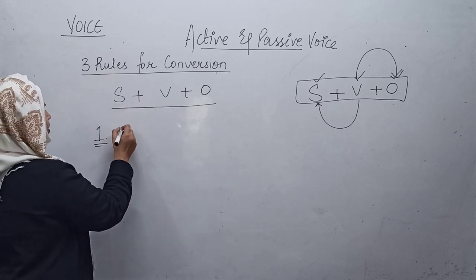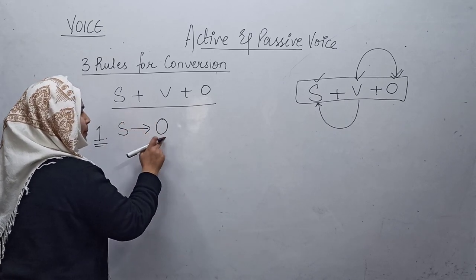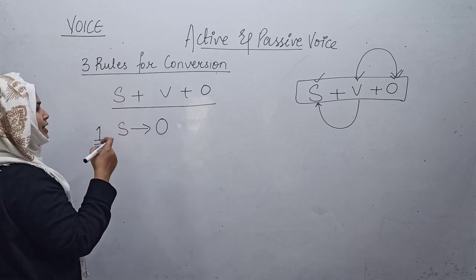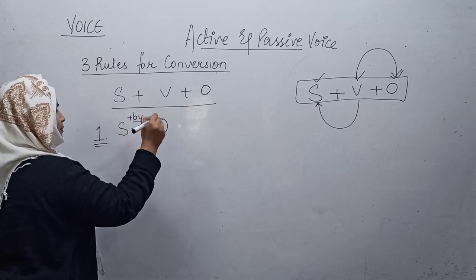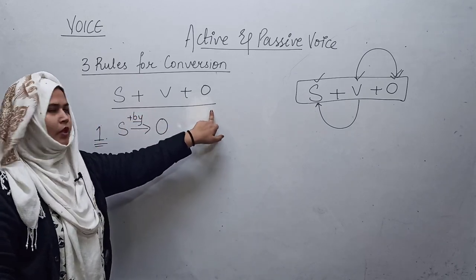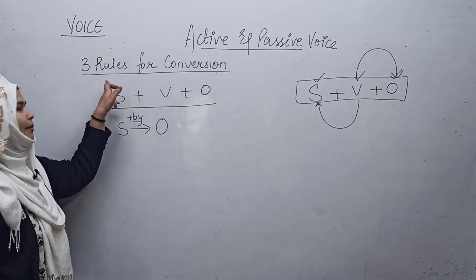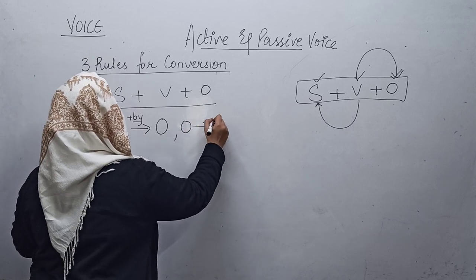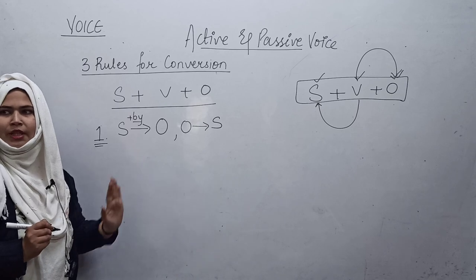My first rule states: when converting active to passive, the subject will go to the place of the object, and it will be added with 'by'. And since the subject has taken the object's place, the subject's place is now empty — so the object will come to the place of the subject. This is my first rule.